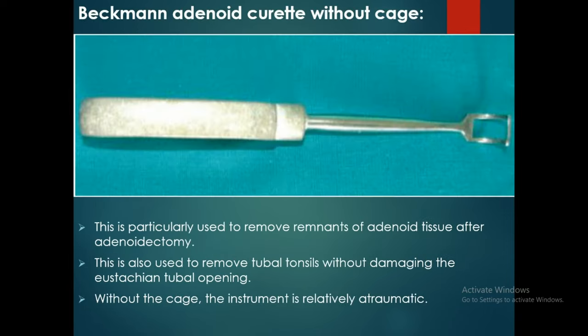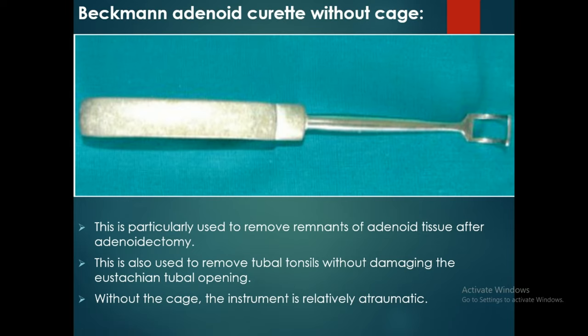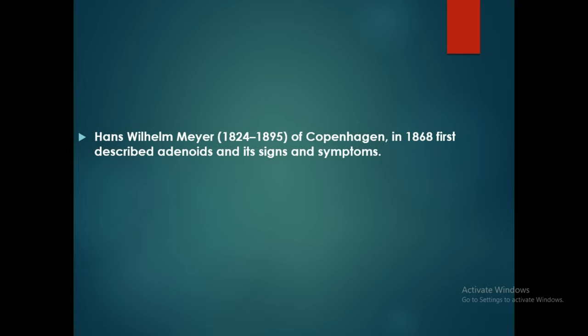This is the Beckmann adenoid curette without cage. It is particularly used to remove remnant adenoid tissue after adenoidectomy, and also to remove the tubal tonsil without damaging the Eustachian tube opening. Without the cage, the instrument is relatively atraumatic.